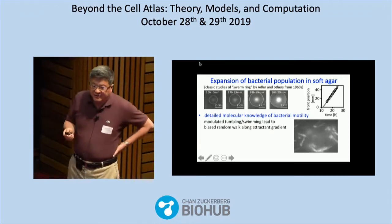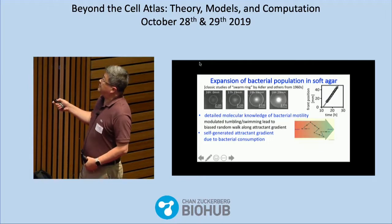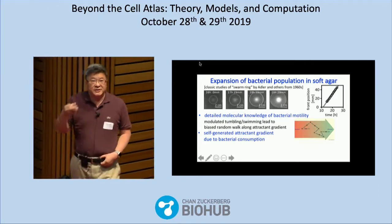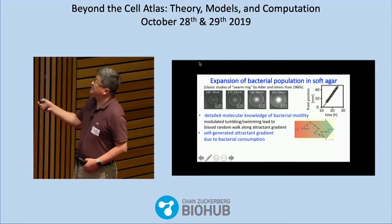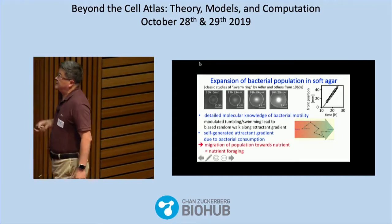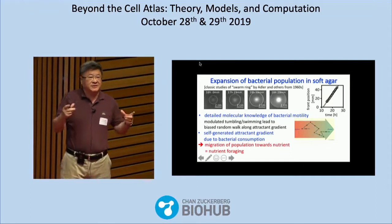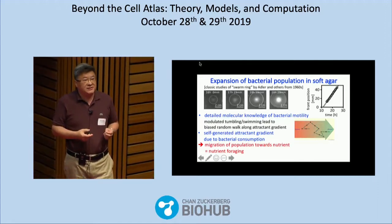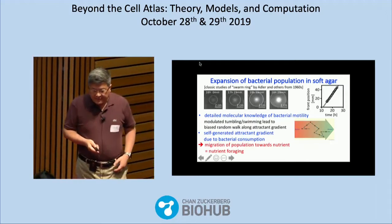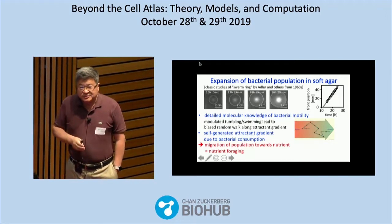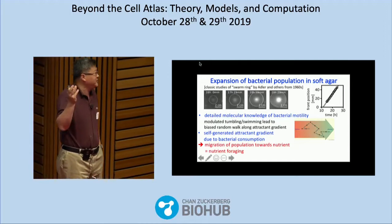Putting these together, it's very easy to come up with a picture that perhaps the bacteria out there at the ring were consuming these attractants as a nutrient. That leads to a self-generated gradient that pushes the bacteria to migrate outward. The meta-lesson learned is that maybe these bacteria are using chemotaxis for nutrient foraging — to basically chase after the nutrient. This phenomenon was discovered 60 years ago and was thought to be understood for at least 40 to 50 years.